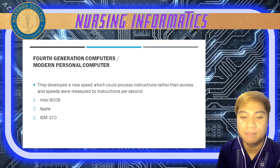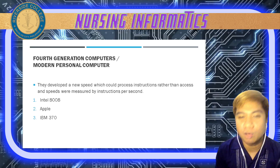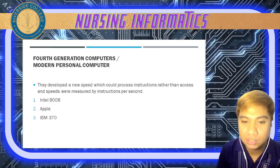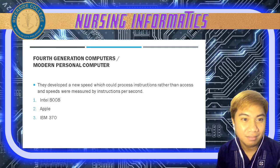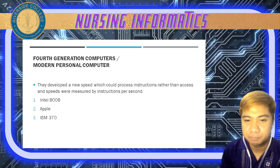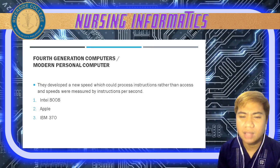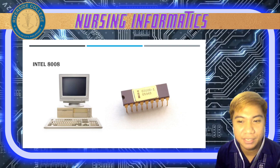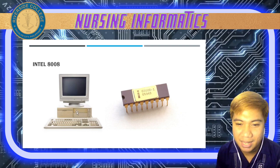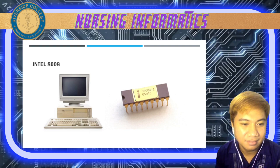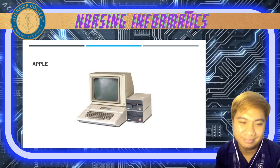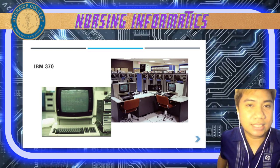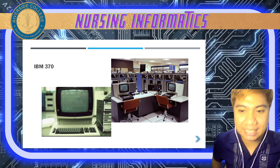These fourth generation computers were so fast that the old measurement of speed was unsuitable — they processed files and data much more quickly. You can see the Intel 8008 with its diskette slots, Apple computers, and the IBM 370 — these are the modern-day PCs we use today.